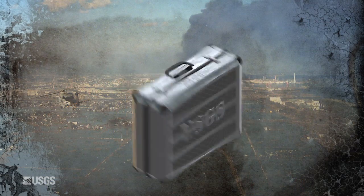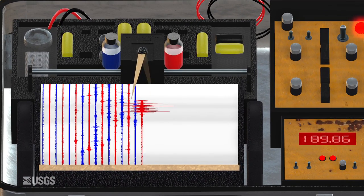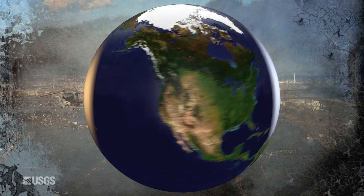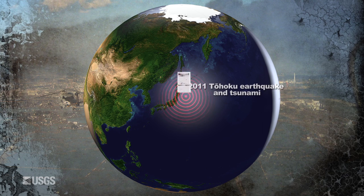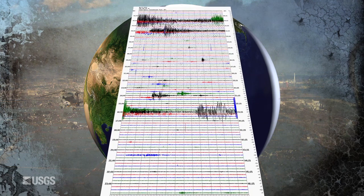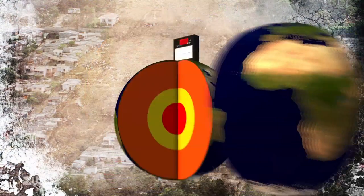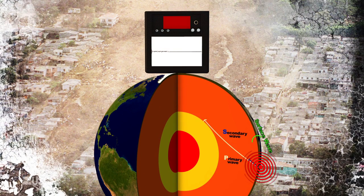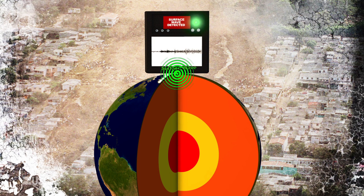Seismometers are sensitive enough to pick up vibrations from earthquakes around the world, if they're big. This is what the giant 2011 Japan earthquake looked like on a seismometer in Wyoming, 5,000 miles away. Compared with the P and S waves that travel through the Earth, surface waves are slower and arrive later, but can continue to be recorded for hours as they propagate around the Earth.